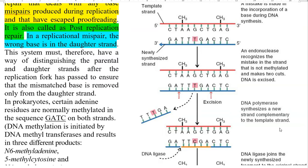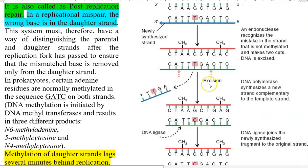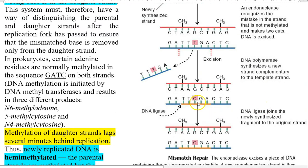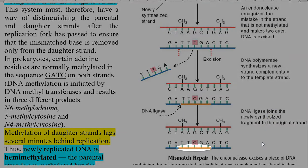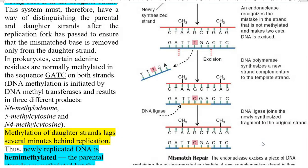The parental strand is fully methylated whereas the daughter strand takes some more time to get fully methylated. After excision of the wrong base-containing sequence region, DNA polymerase plays its role — it synthesizes a new strand complementary to the parental template strand. As a result, the correct base is added, and finally DNA ligase joins the newly synthesized fragment to the original fragment.